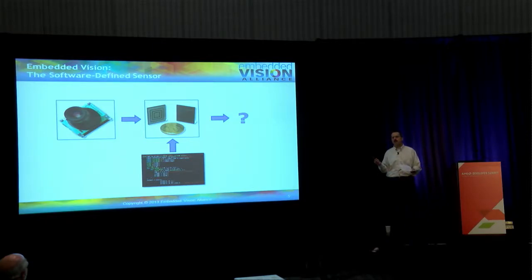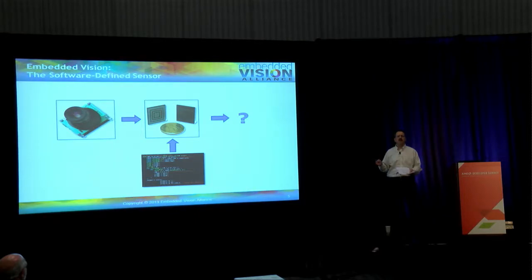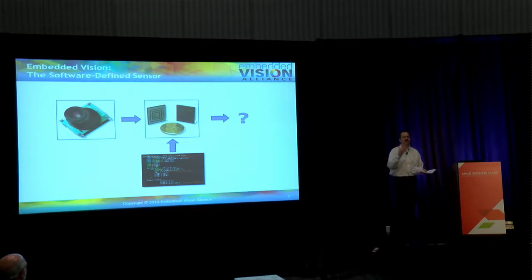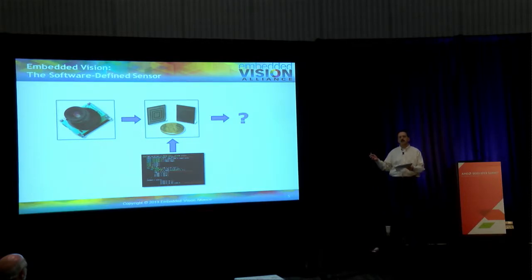One great example that illustrates this concept is smartphones. Chances are your smartphone was not designed with computer vision in mind, because only a few of the latest models come with things like eye-tracking enabled. Rather, it was designed with an image sensor to capture photos and video. Nevertheless, you can go to your app store and download dozens of applications that implement vision — read your heart rate from video of your face, check your sobriety by looking at your eye, recognize your face to unlock your device, or recognize hand gestures to control it. These aftermarket apps use vision to add functionality, illustrating the software-defined sensor concept.